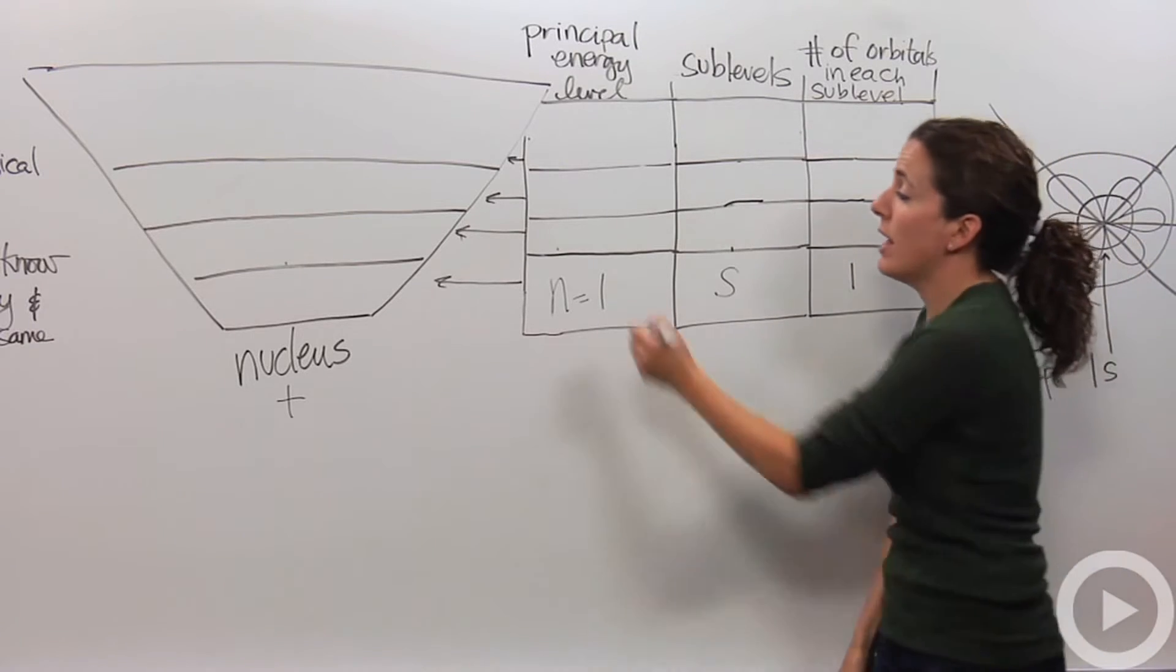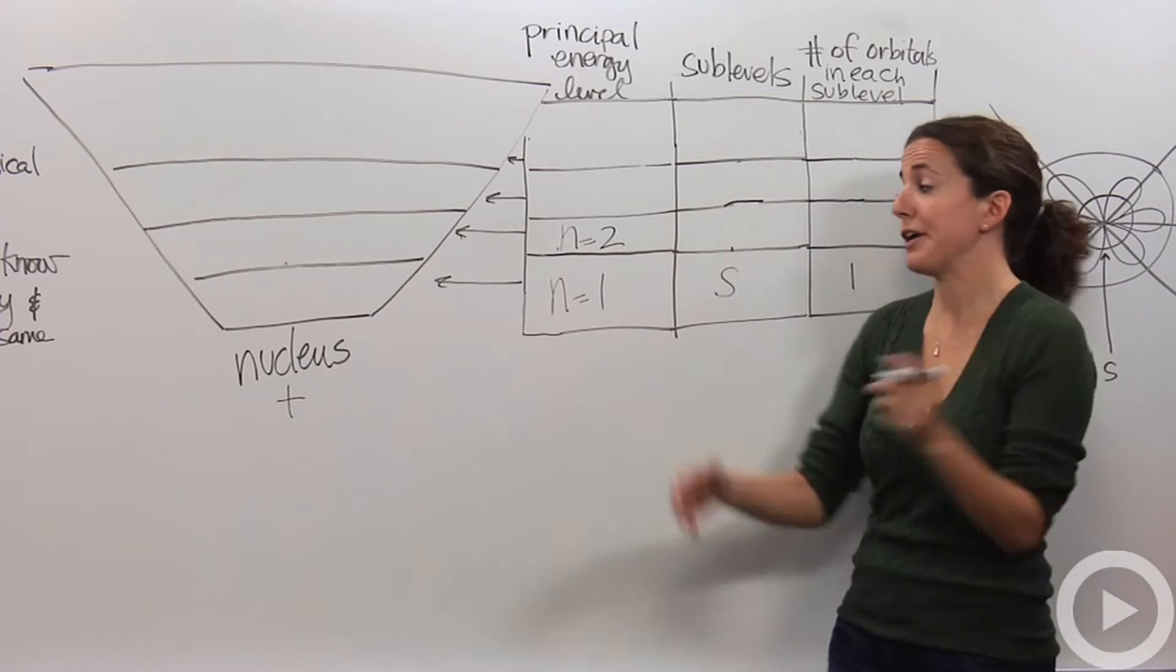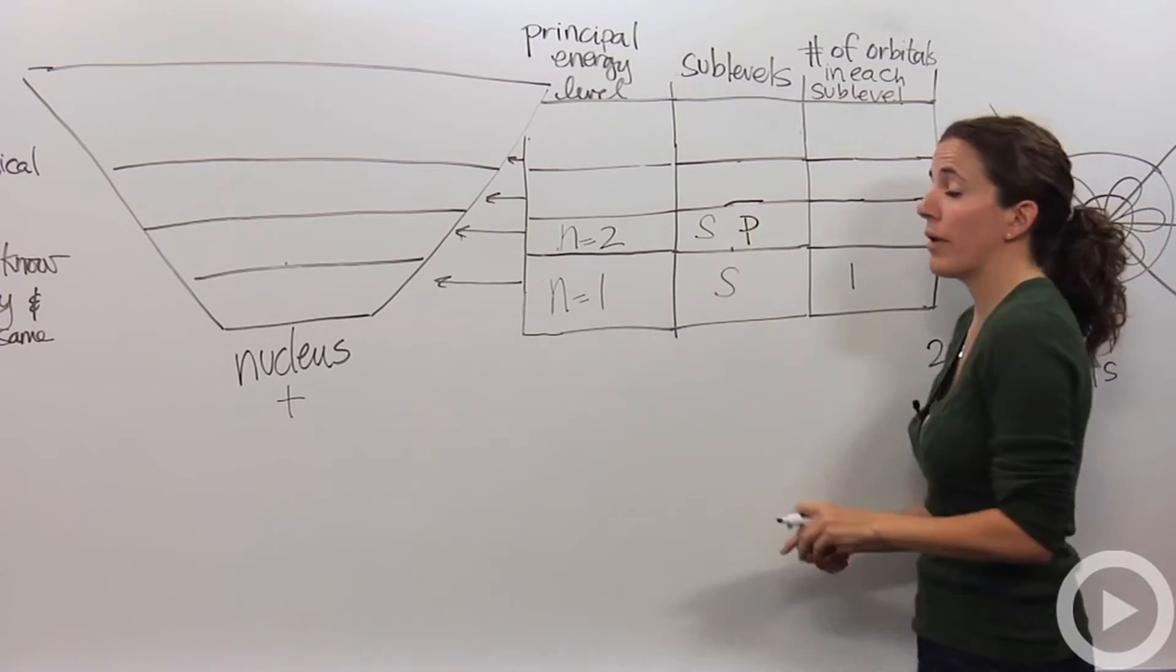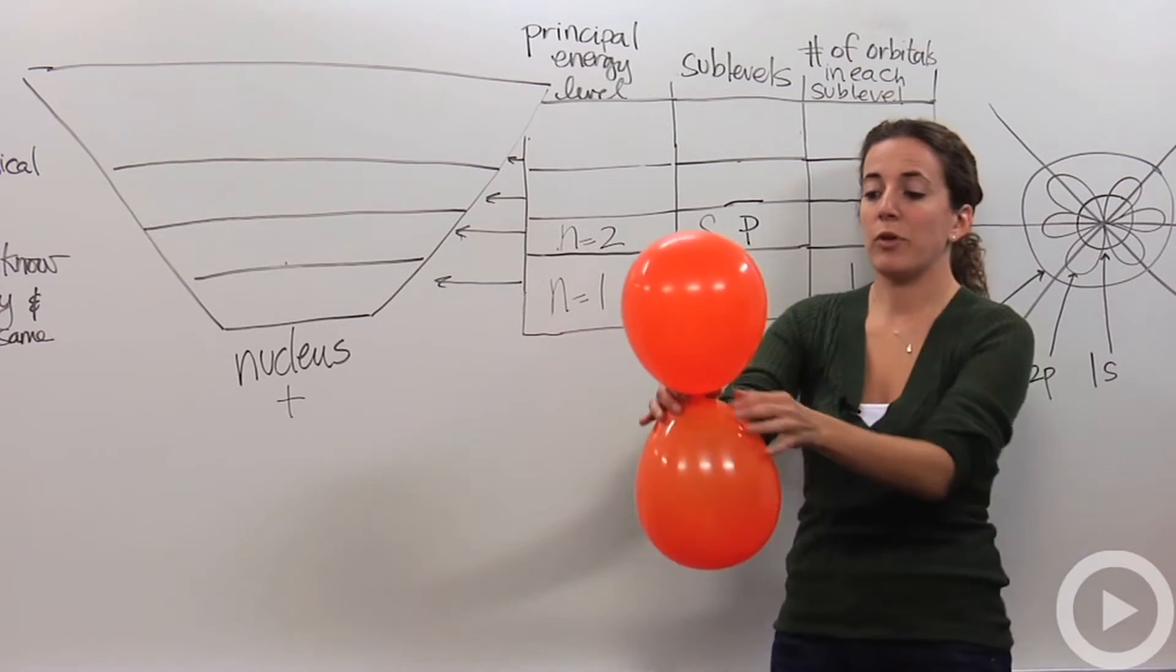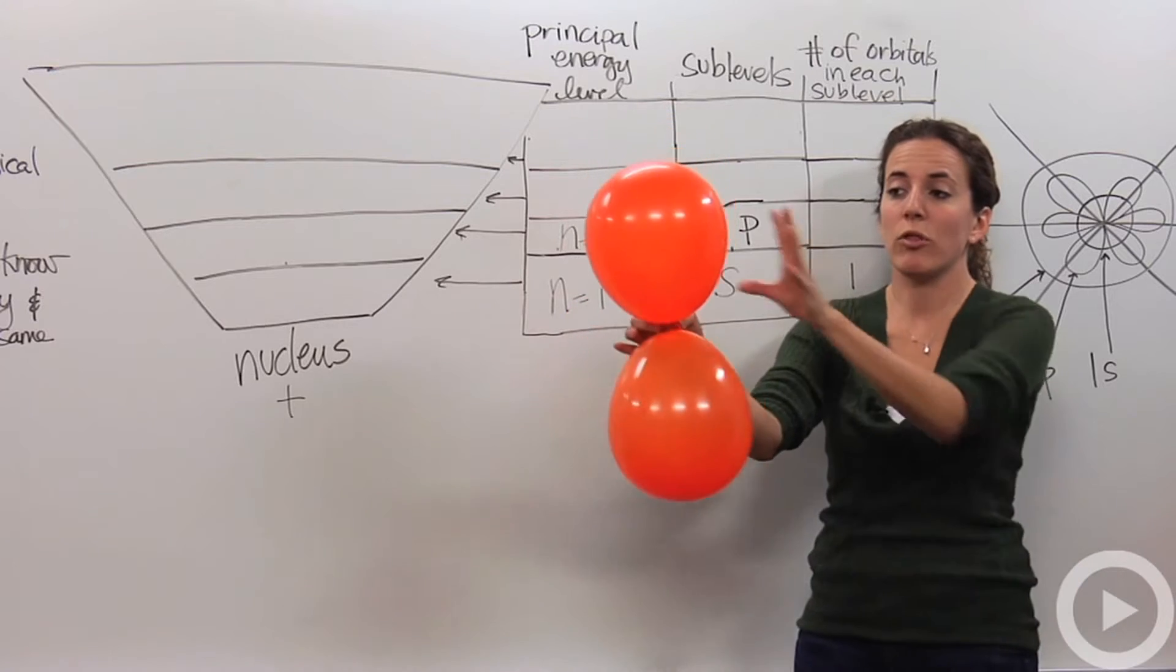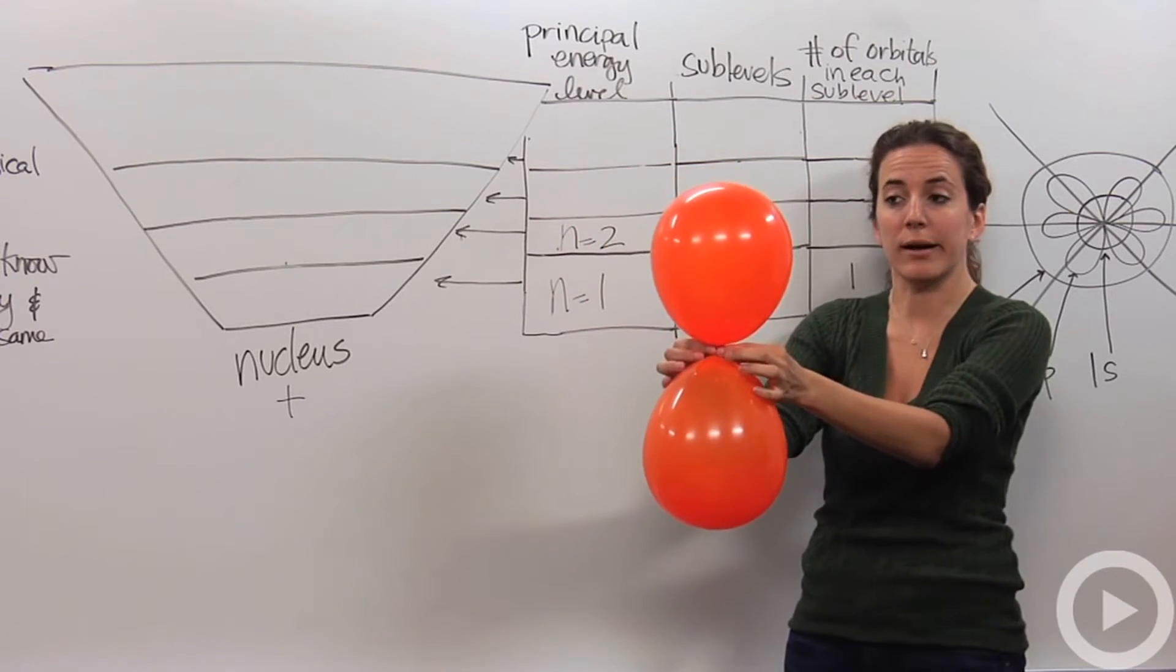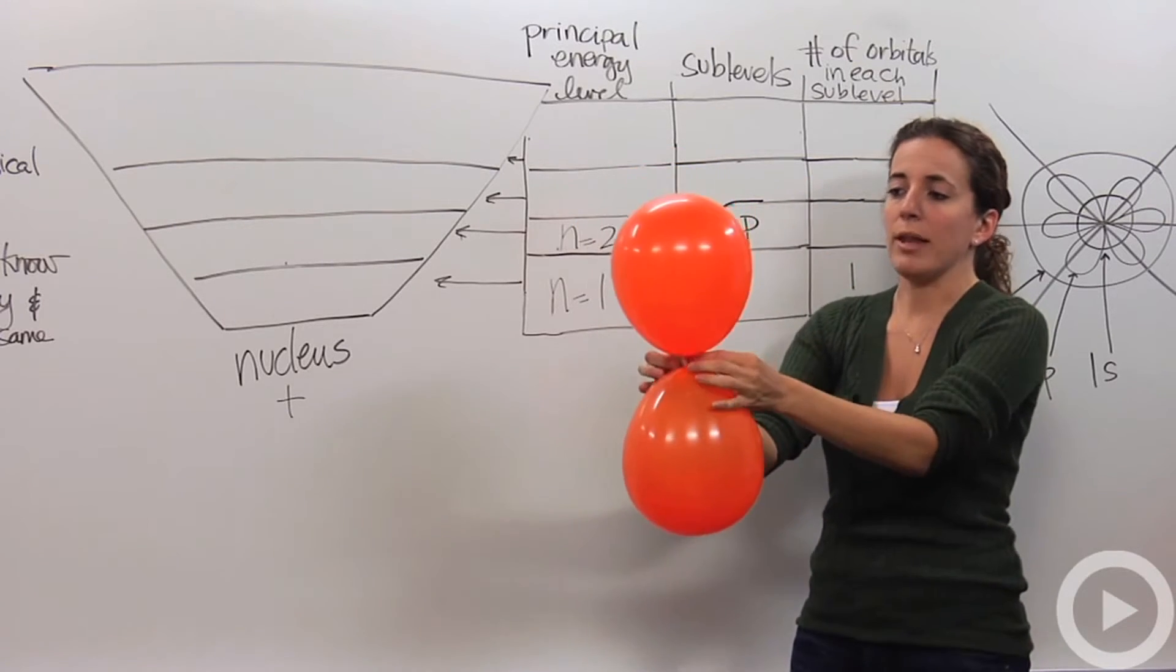In the n equals two principle energy level, there is an s also, a little bit bigger sphere, and there is also p orbitals. P orbitals look slightly different. This is what a p orbital looks like, this is one, even though there is two balloons, this is one p orbital. The nucleus is kind of where the knots are, and the electrons can be found either here or here, and it looks like a dumbbell shape.